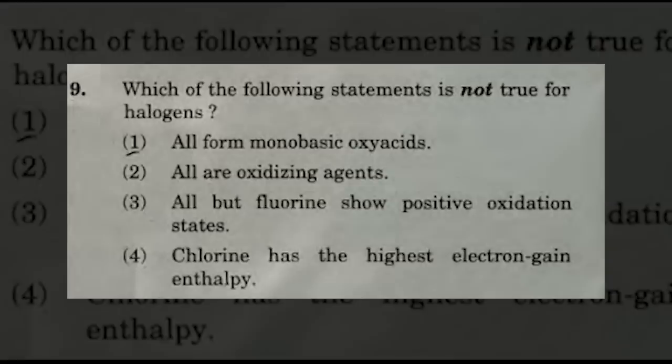Chemistry has a total of 45 questions, of which 4 are doubtful. The first question is: which of the following statements is not true about halogens? The suggested correct answers are options 1 and 3 — that is, option 1: all form monobasic oxides, and option 3: all but fluorine show positive oxidation state.